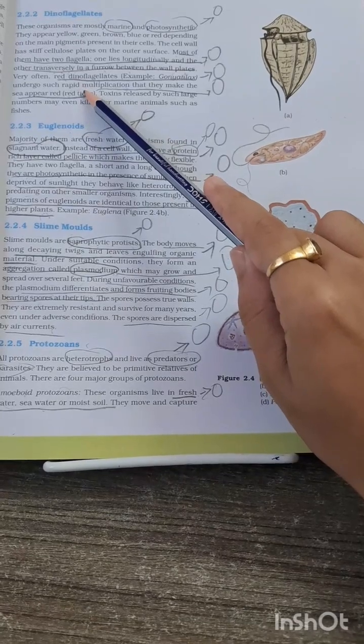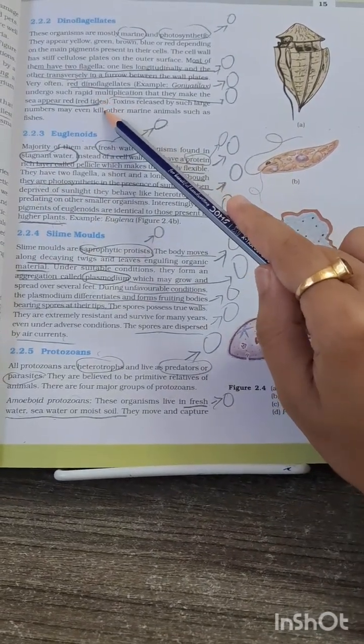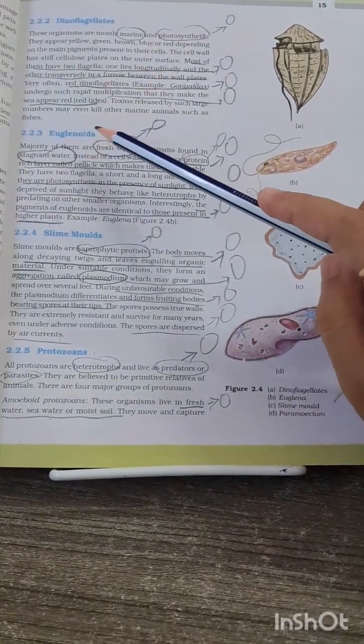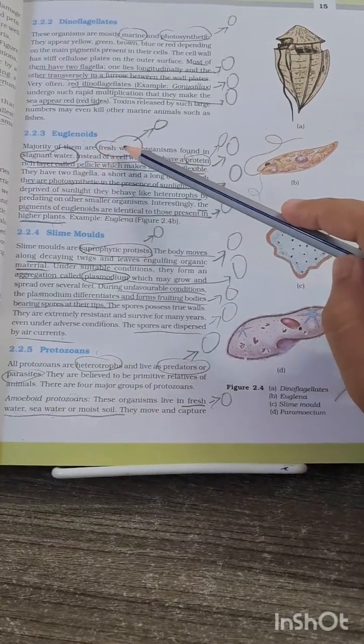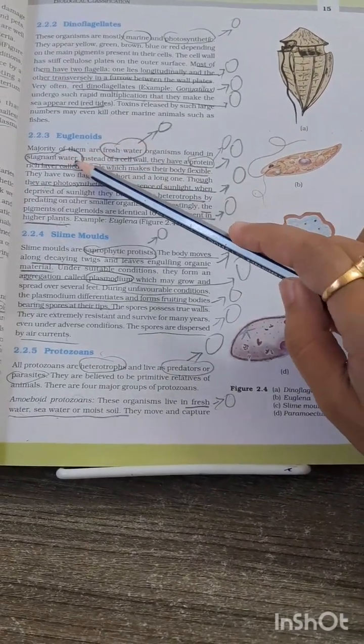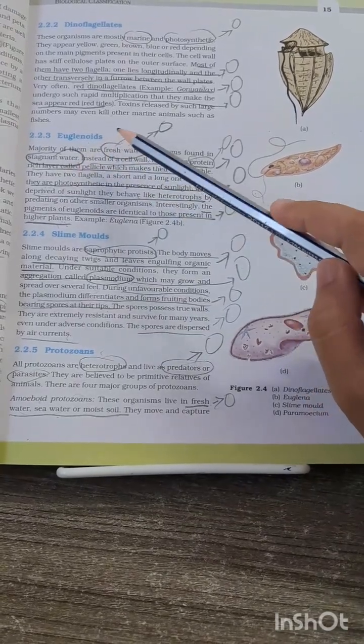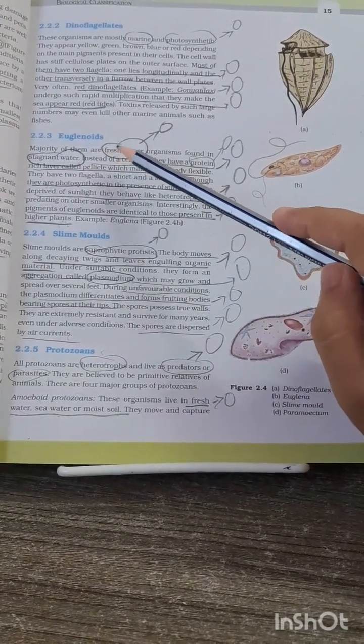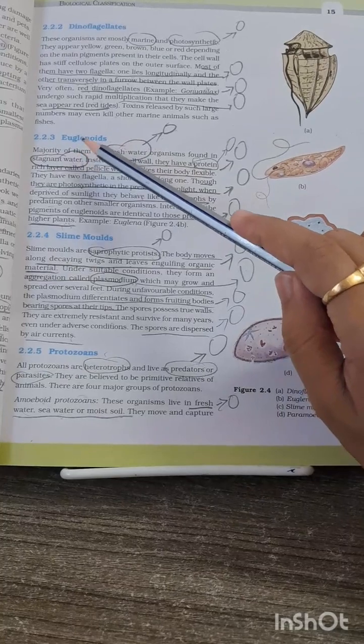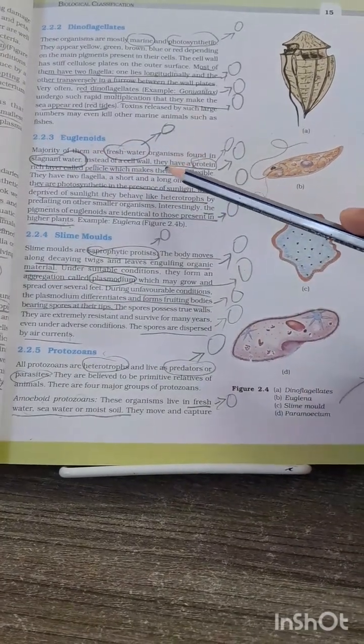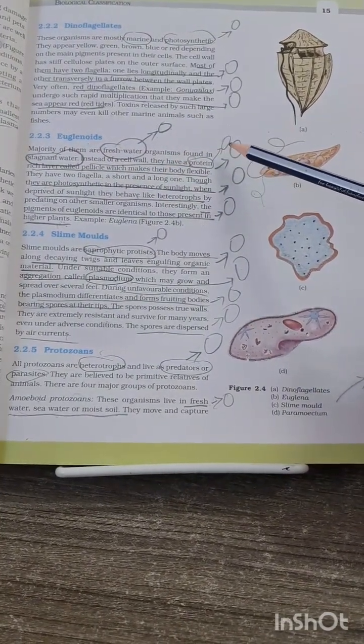Now coming to the euglenoids. The very first MCQ can be they belong to freshwater and stagnant water. About this habitat, it has been asked many times and do not get confused between other classes and the euglenoids.